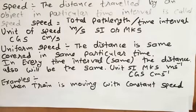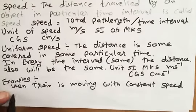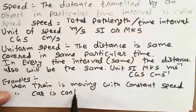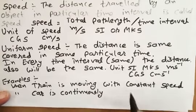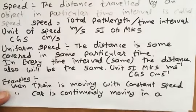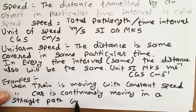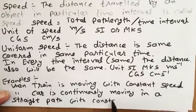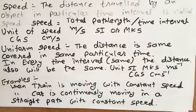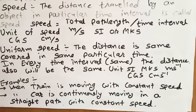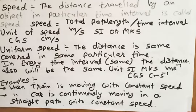Another example of uniform speed: when a car is continuously moving in a straight line along a straight path with constant speed. Since we are talking about speed, there is no need to involve direction.